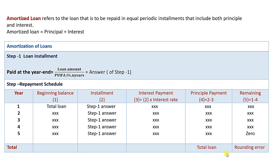Suppose you need to pay 10% interest at the bank. You need to pay 5-year installments at 5% interest at the bank. If your bank loan is for 5 years, you need to pay the principal.